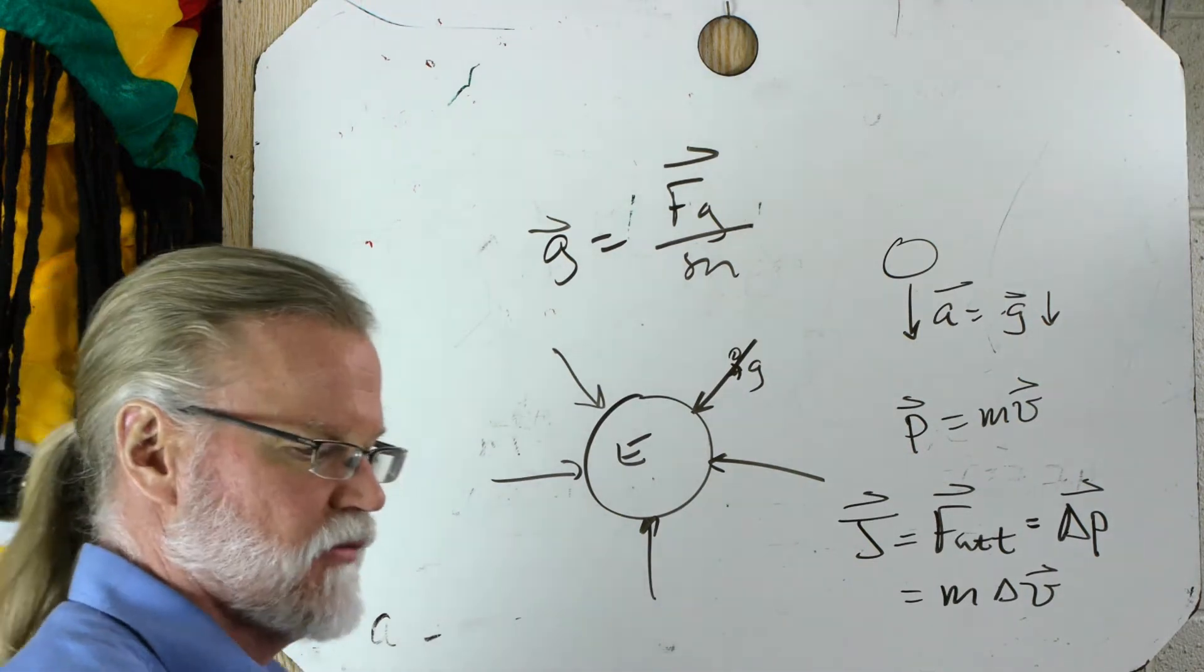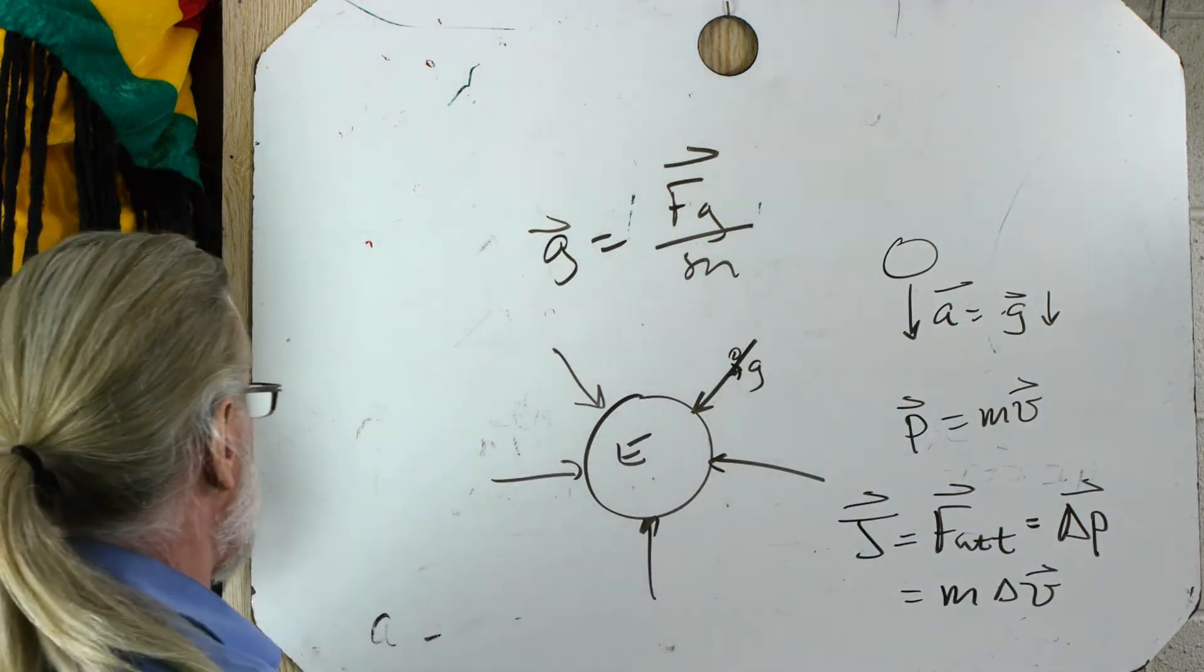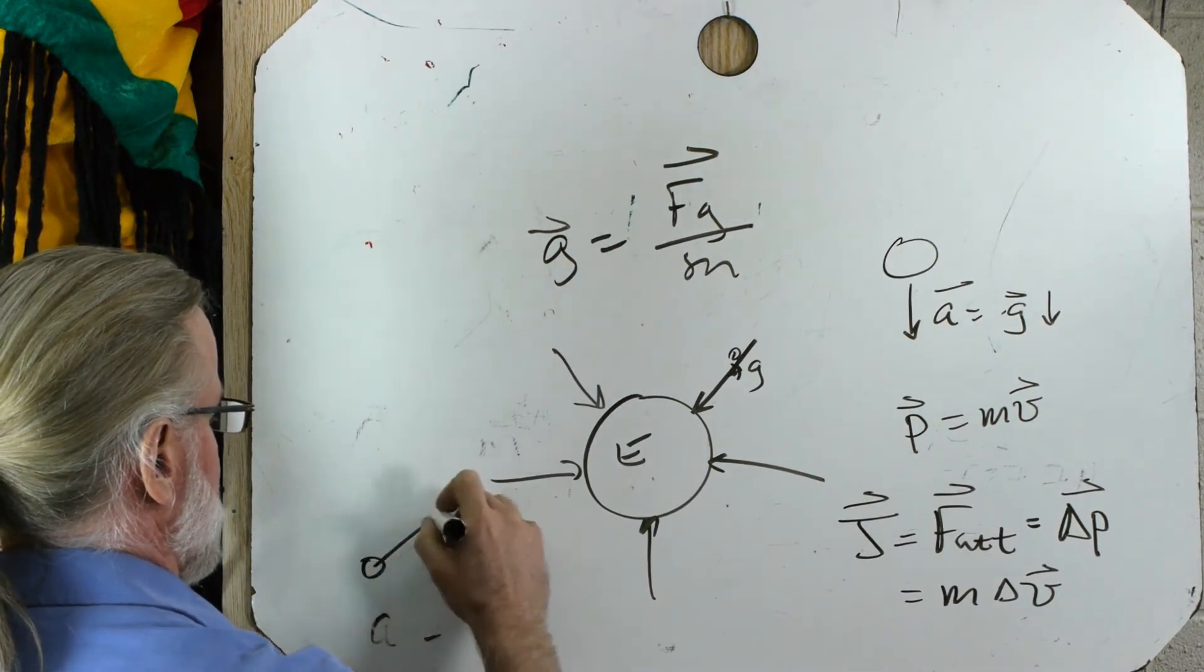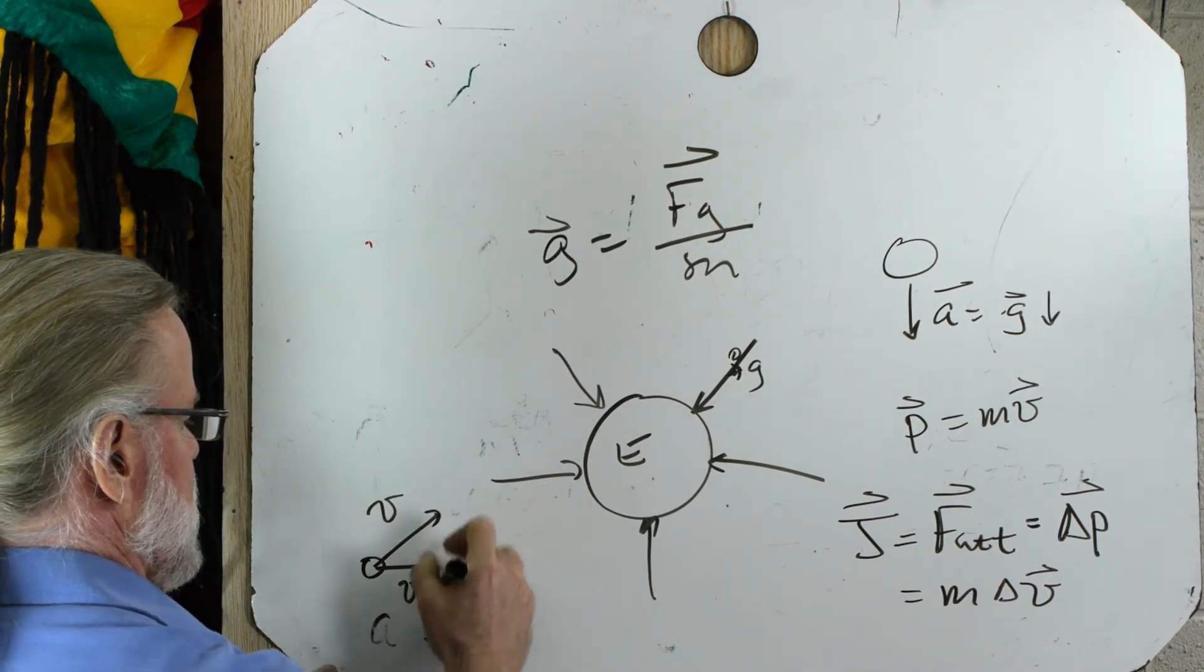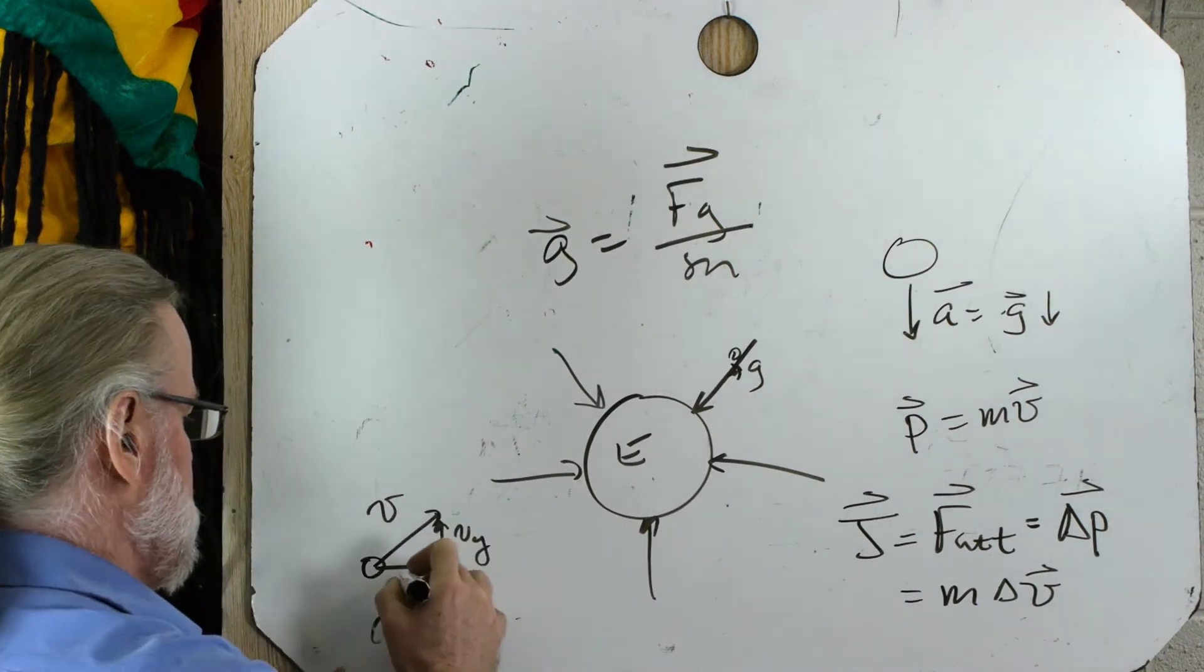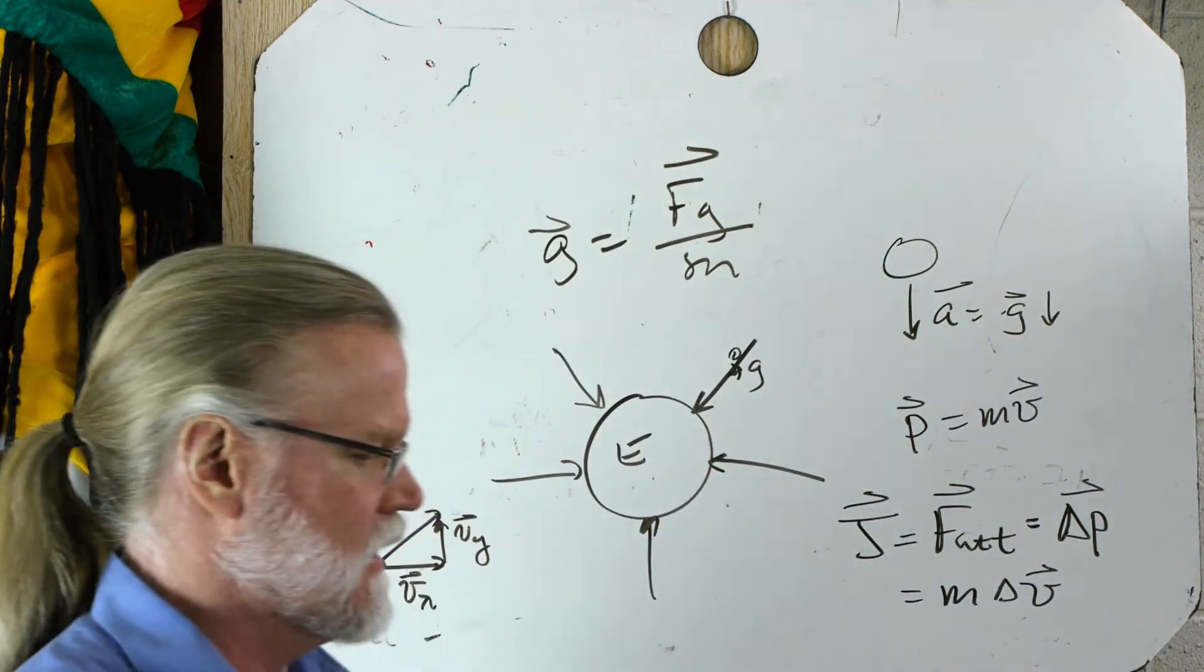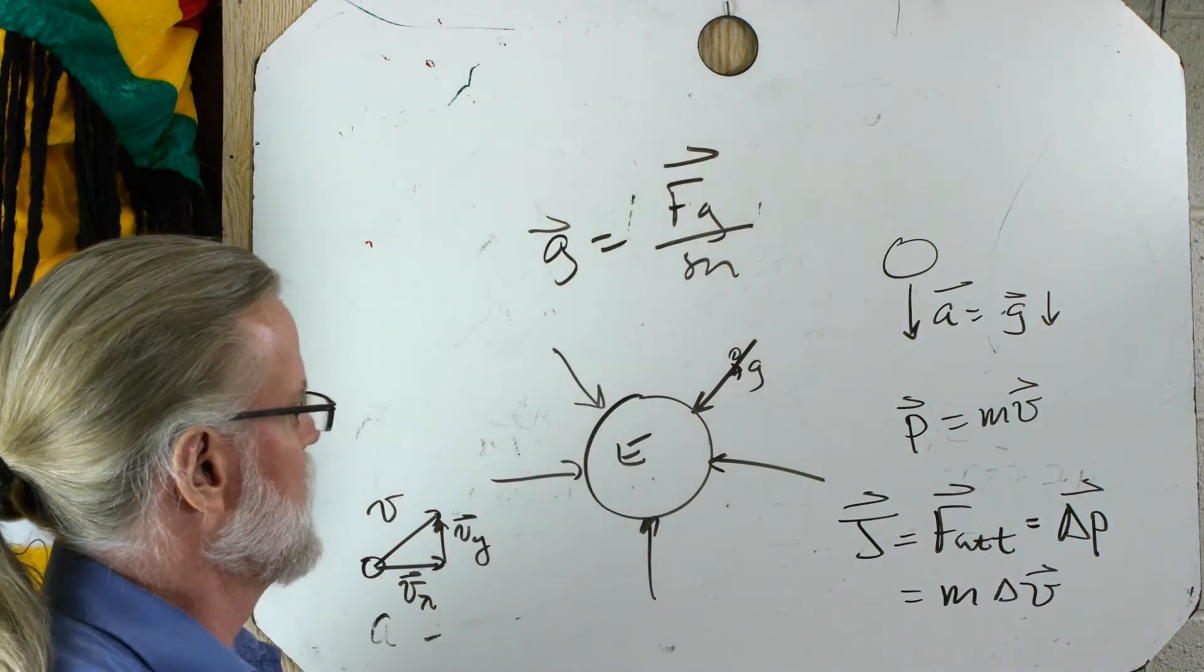And if you review the projectile motion video that I made earlier, you saw that if a ball is launched at an angle like this, it can be broken down. Velocity can be broken down into components and so forth. So review the other videos if you want to get more information.